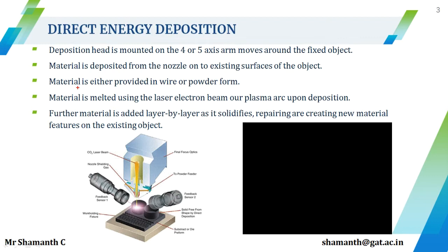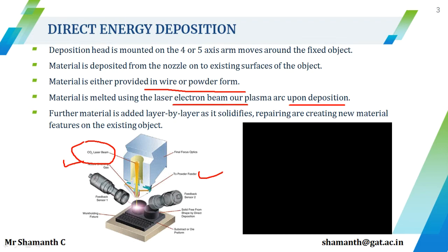There are two nozzles — one for the powder feeder and one used to shield the gas. A CO2 laser is supplied through another nozzle; the heat generated causes the metal powder to melt and get deposited on the material. As the deposition head moves away, the deposited material slowly solidifies. The material is melted using a laser, electron beam, or plasma arc upon deposition, and further material is added layer by layer. As it solidifies, the deposition head moves up one layer thickness and is ready to add new material.